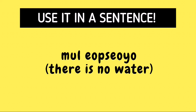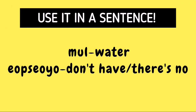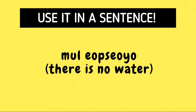Mul opsoyo. This sentence means there is no water. The word mul is already discussed on this channel and we know that this is just the Korean noun for water. And opsoyo, our word for today, is used to say that I don't have something or there isn't something. For this case, that something pertains to the noun mul, which means water. Therefore, the sentence mul opsoyo simply means there is no water.